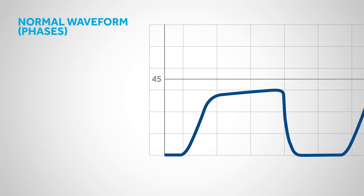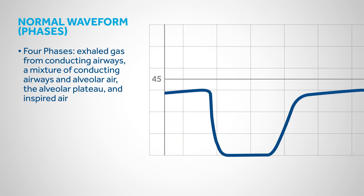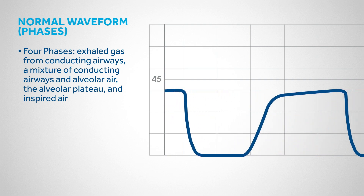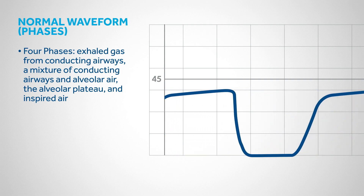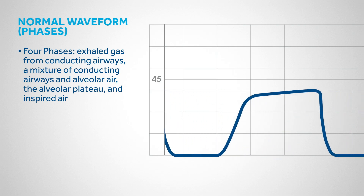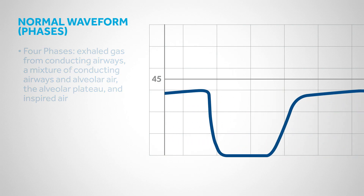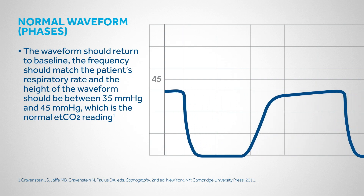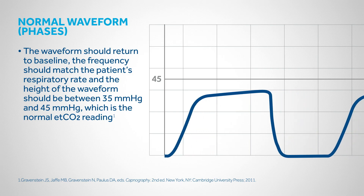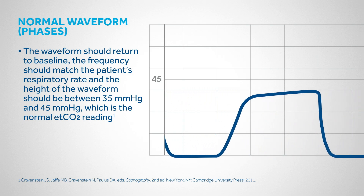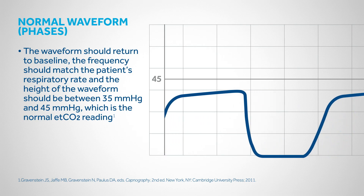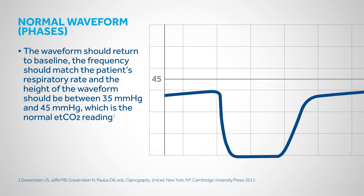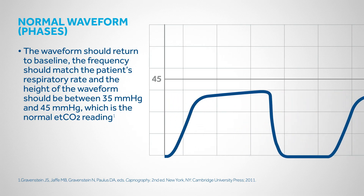The capnography waveform shows four phases: exhaled gas from conducting airways, a mixture of conducting airways and alveolar air. In capnography, there are very few variations from a normal waveform. The waveform should return to baseline, the frequency should match the patient's respiratory rate — both spontaneous and mechanical — and the height of the waveform is usually between 35 and 45 millimeters of mercury, which is the normal end-tidal CO2 reading.